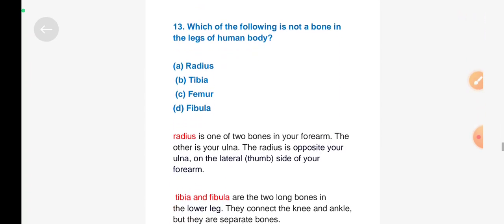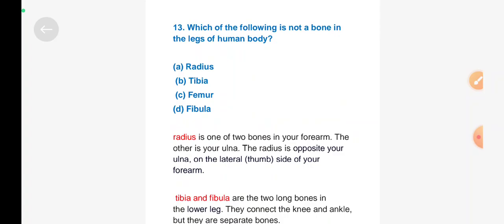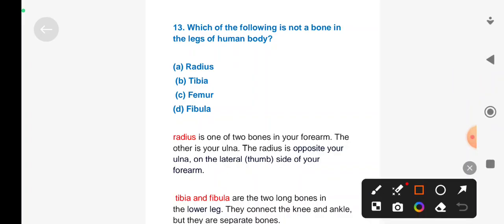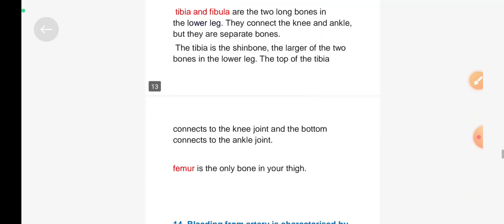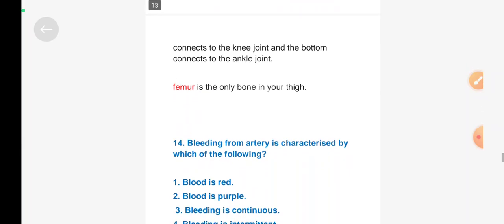Next question: Which of the following is not a bone in the legs of the human body? Option A: radius, Option B: tibia, Option C: femur, Option D: fibula. Right answer is Option A, radius. Radius is one of the two bones in your forearm, the other is your ulna. The radius is opposite your ulna on the lateral side of your forearm. Tibia is the shinbone. Femur is the only bone in your thigh.